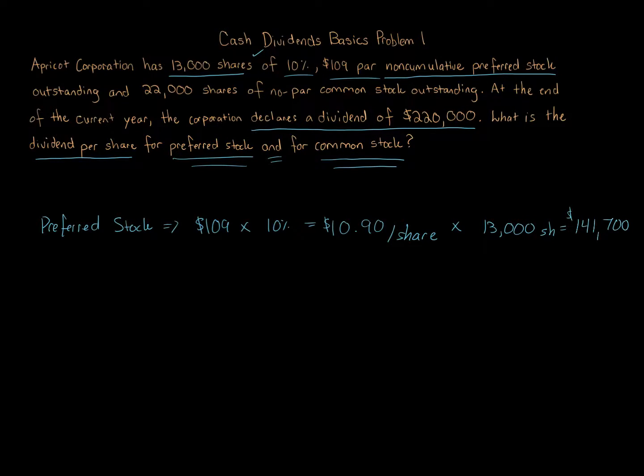Now you've got to pay attention to what the question is asking. The question is asking, what is the dividend per share for preferred stock and dividend per share for common? We've actually already calculated that. It's $10.90 per share for preferred. We still had to calculate the total of $141,700 because if the $141,700 was greater than the total dividend, we'd have to recalculate the dividend per share for preferred stock. But the $141,700 is less than the $220,000.